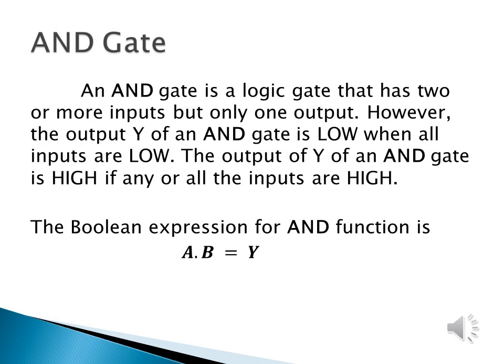Now let us come to the AND gate. An AND gate is also a logic gate that has two or more inputs but only one output. The output of an AND gate is low when all the inputs are low, but the output is high only if all the inputs are high. The boolean expression for the AND function is A dot B equals Y, where the multiplication dot stands for the AND operation.